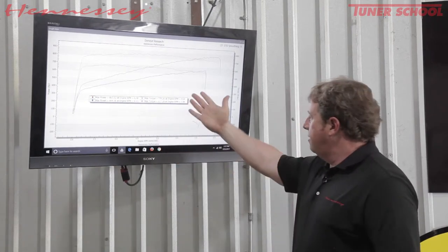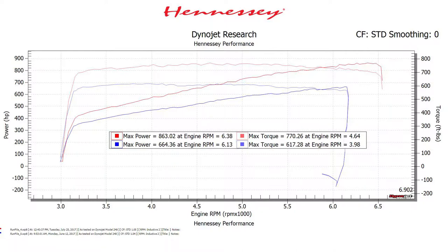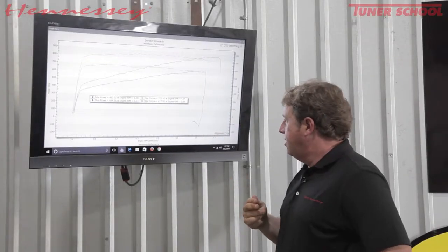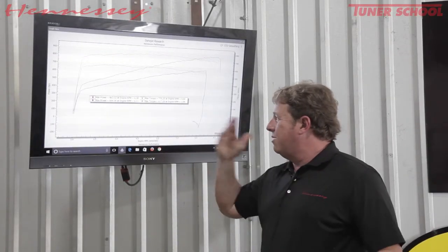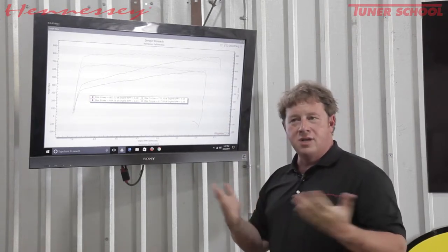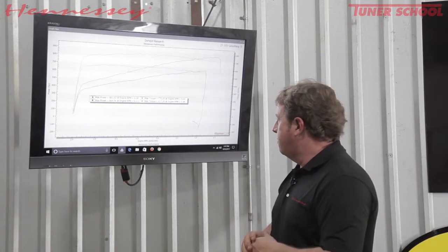So the numbers at the rear wheels stock are pretty darn impressive. This is one of the higher producing Hellcats that I've seen on our dyno, producing a peak horsepower number of 664 rear wheel horsepower. Typically we see the Hellcats more in the 630, 640 at the wheel range, comparing that to the 707 at the motor.